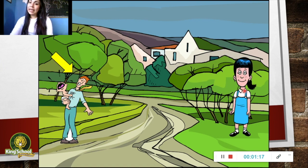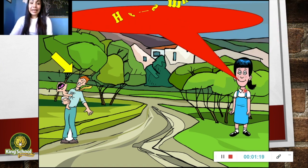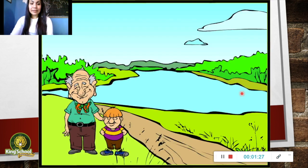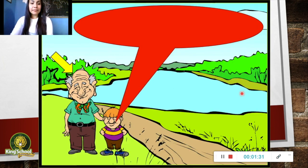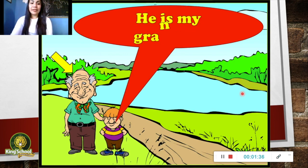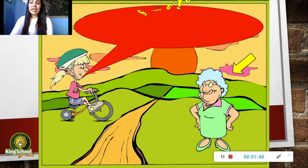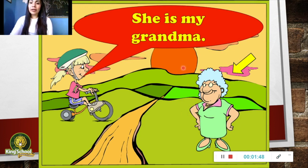Who is he? He is my dad. Who is he? He is my grandpa. Who is she? She is my grandma.